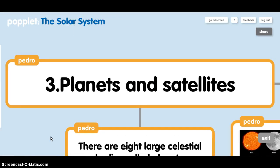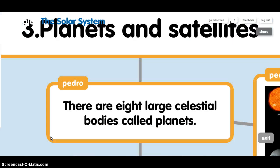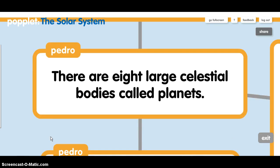Planets and satellites. There are eight large celestial bodies, called planets.